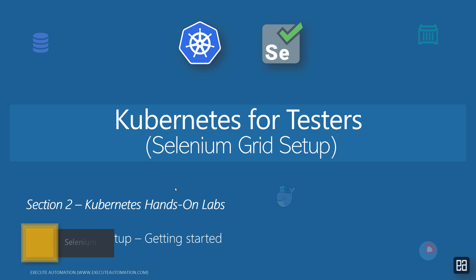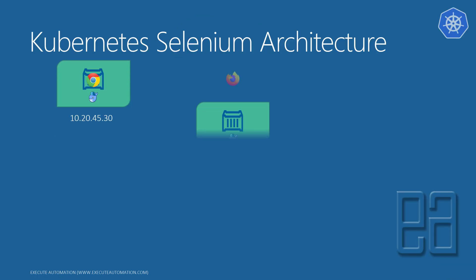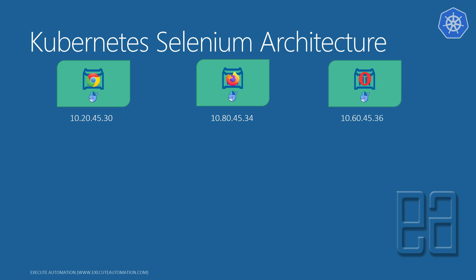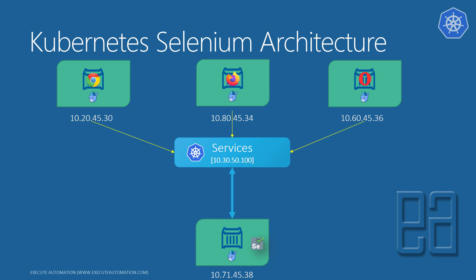In our earlier video we discussed the Kubernetes architecture that we are going to be achieving in this section, which is going to look something like this. There will be a lot of pods and each pod is going to communicate with another pod which is going to be the Selenium hub. So it's basically a Selenium Grid setup, and the pods or nodes are going to communicate with the Selenium server using what are called services.